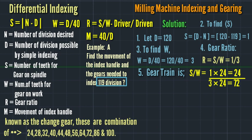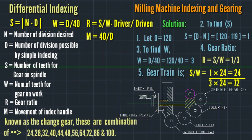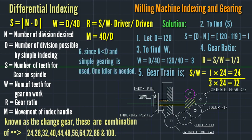This is the gearing arrangement. This is the spindle gear, this is the first idler, this is the worm gear. This is the index spindle, this is the index handle, this is the index plate. Since N is less than D and simple gearing is used, one idler is needed.